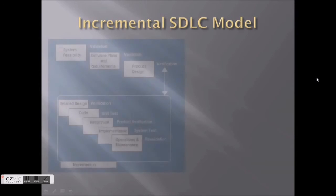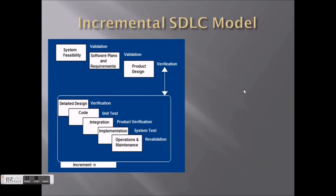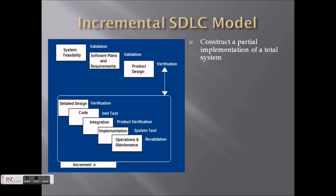The incremental SDLC model is a software development lifecycle model. This figure shows the various phases of the incremental SDLC model. The most important aspect is the increment — a product is made with minimum or major functionality first, then various features are added again and again. This iteration continues until user requirements are met, constructing a partial implementation of a total system.